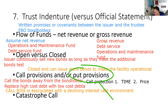Some bonds have a put provision, some do not. Put provisions are advantageous to the bondholder in a rising interest rate environment. Call provisions are advantageous to the issuer in a declining interest rate environment. If a bond has a higher price and a lower yield than other bonds, it's because it has a put provision — at the end of five years, you can put this back to the issuer.